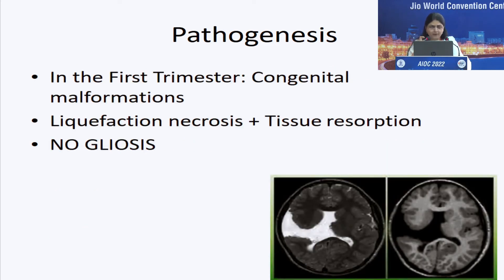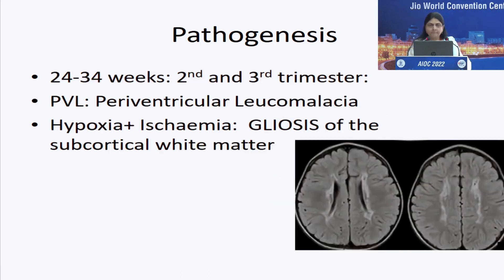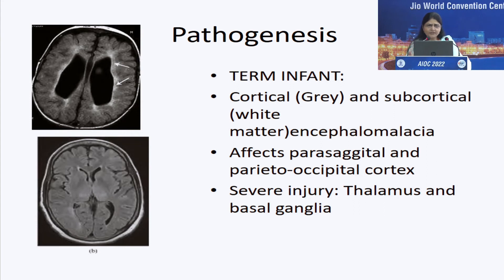Let's be very time-specific. In the first trimester, a hypoxic insult will result in congenital malformations — the tissue will undergo necrosis with no gliosis. In the second to third trimester, the result of hypoxia will repair with gliosis, and the commonest area affected is the subcortical white matter, giving rise to the classical lesion of periventricular leukomalacia. In a term infant, both the grey and white matter are affected, most commonly in the parasagittal and parieto-occipital cortex. With severe injuries, the thalamus and basal ganglia can also be involved.